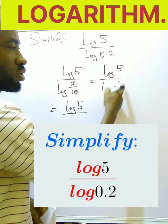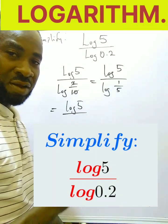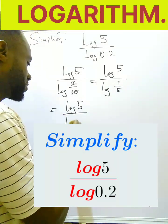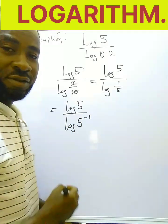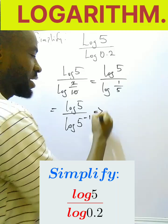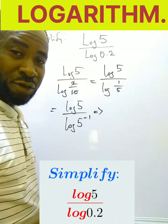Next, I'm going to put this 1 by 5 in index form based on our laws of indices, so it becomes 5 to the power of minus 1. Can you see that?